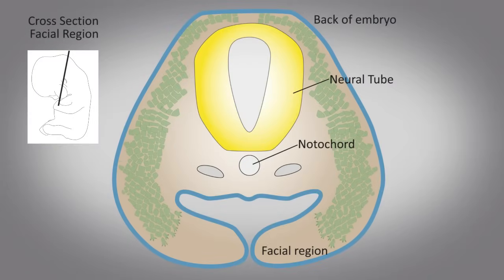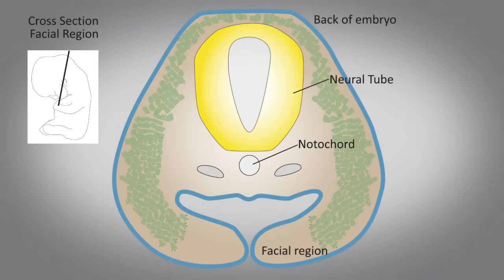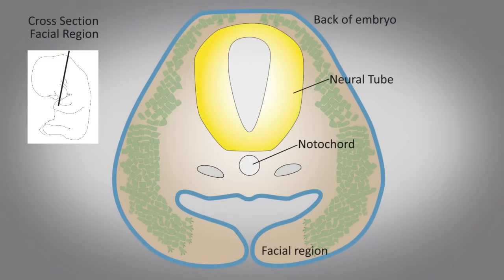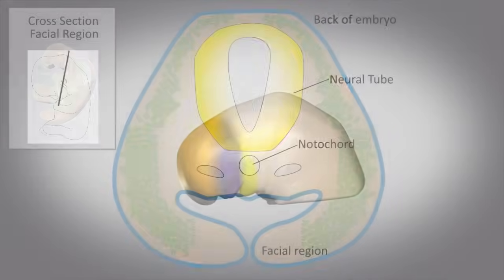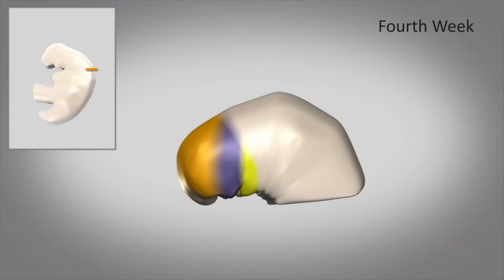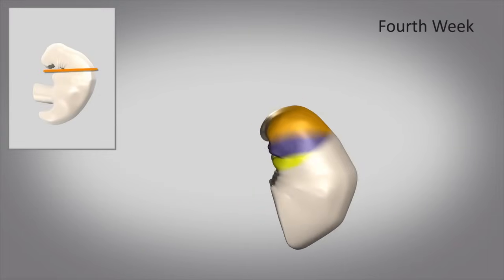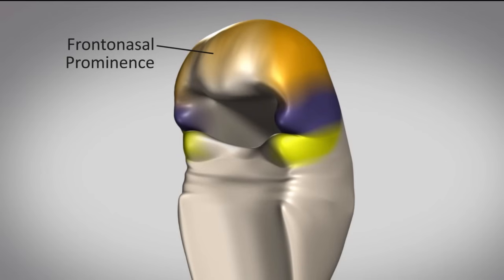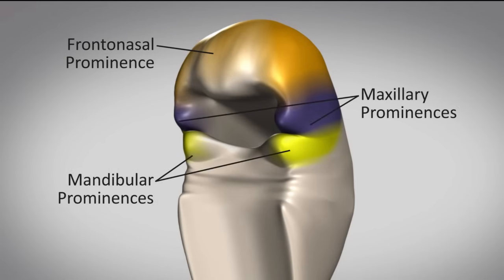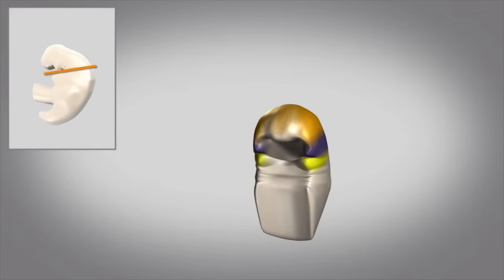Soon after the CNCCs reach their final destination, the facial structures begin to take shape externally. By the fourth week of development, the embryo is characterized by five facial swellings: the frontonasal prominence and the paired maxillary and mandibular prominences. These structures are formed in part from the migration and proliferation of the CNCCs from different regions of the neural tube.